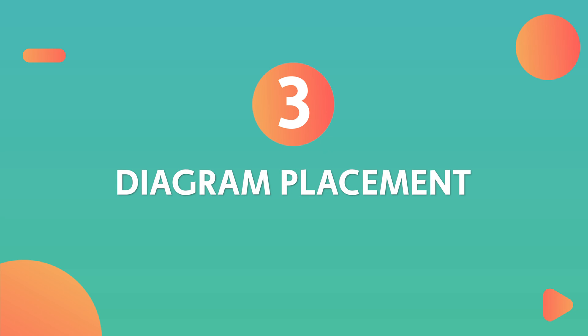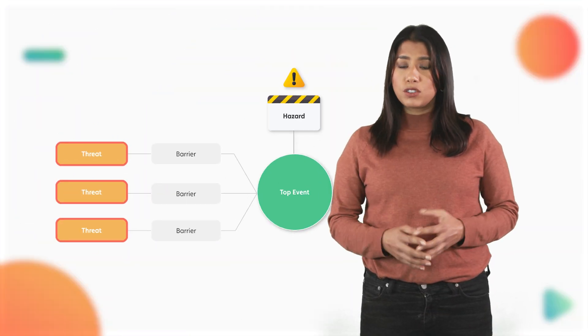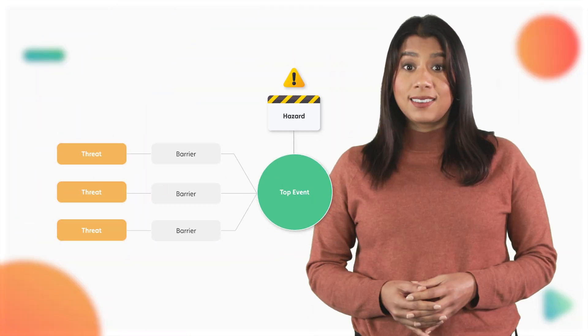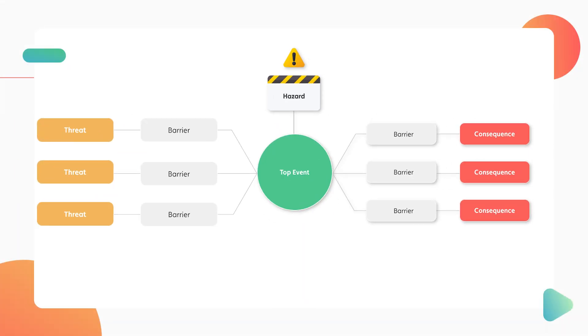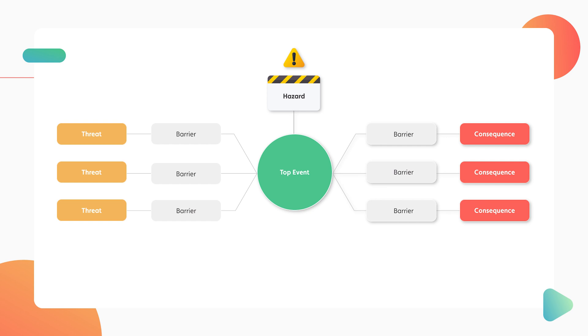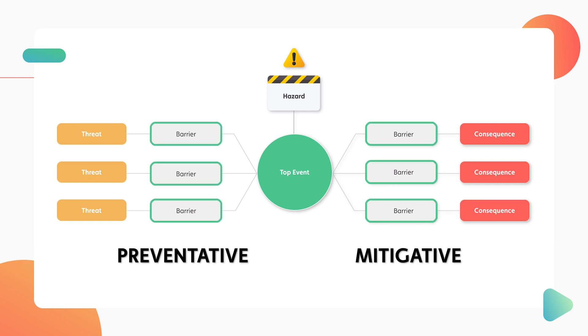Number 3: Diagram placement. Threats exclusively occur before the top event, as they are potential causes leading to the event. Degradation factors, on the other hand, are found on either side of the bowtie diagram, attached to both preventative and mitigative barriers.